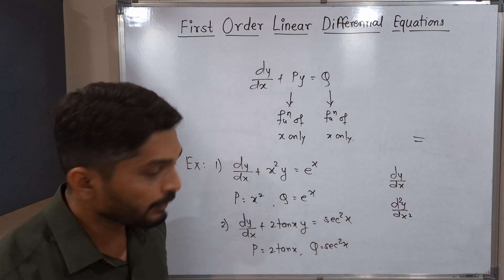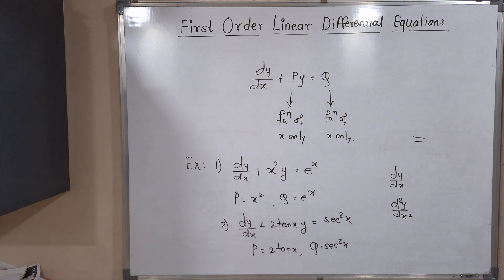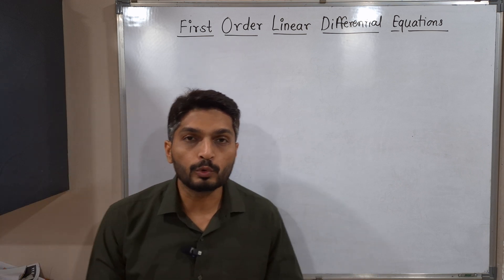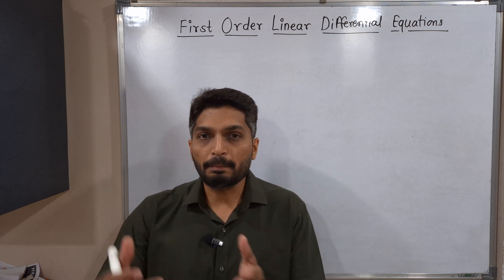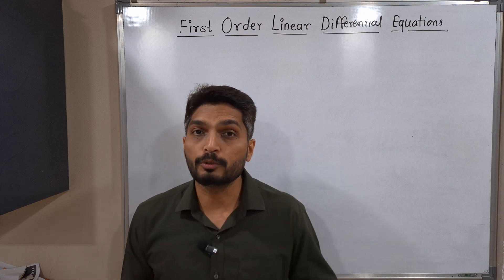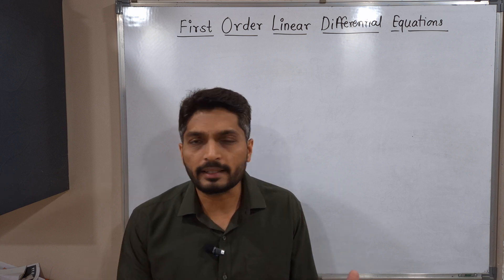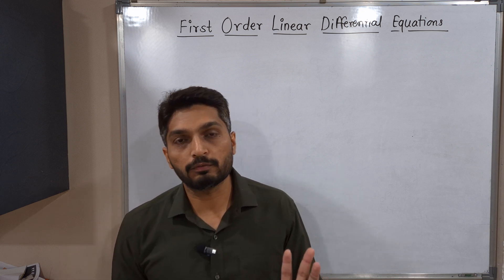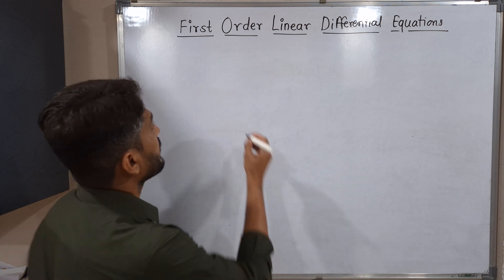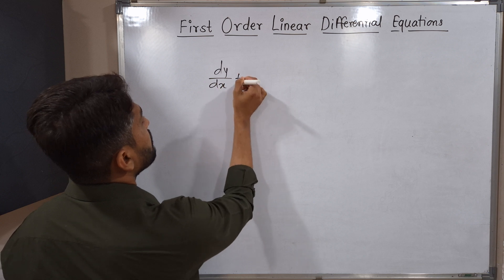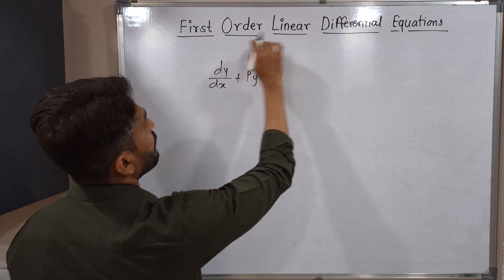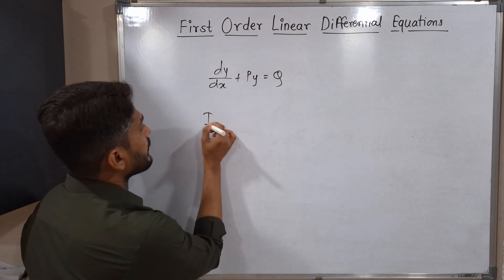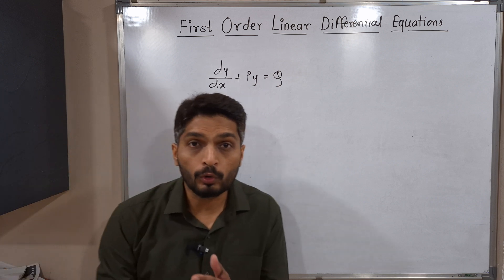This is a very important topic from an exam point of view and has many real-world applications. Now let's discuss how to find its solution. You won't believe it — only two steps are involved. In my previous playlist I covered exact and reducible-to-exact differential equations, which were lengthy. But here, only two steps are needed and we directly get the answer. The standard form is dy/dx + Py = Q, from which we easily identify P and Q as functions of x.